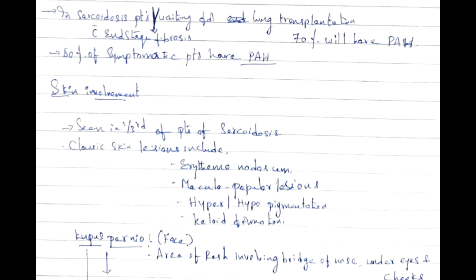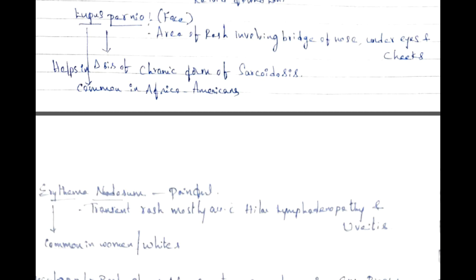Classic skin lesions include erythema nodosum, maculopapular lesions, hyper- and hypopigmentation, and keloid formation. Lupus pernio on the face is a very important skin manifestation — it is a rash involving the bridge of the nose, under the eyes, cheeks, and nasolabial folds. Lupus pernio is very helpful in diagnosing the chronic form of sarcoidosis and is common in Afro-Americans. Erythema nodosum is painful and transient, mostly associated with hilar lymphadenopathy; uveitis is common in women and the white population.